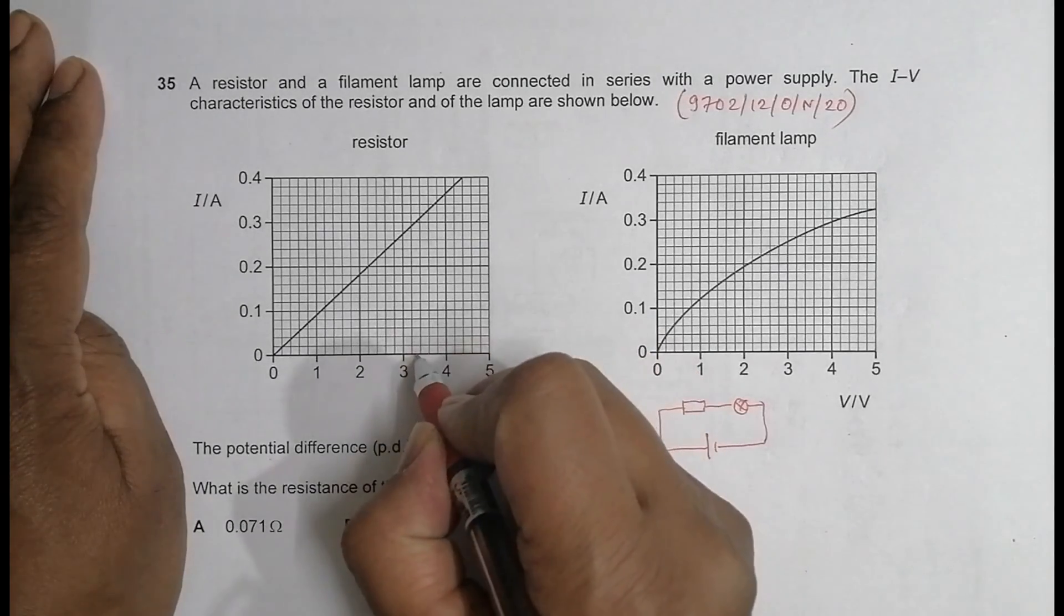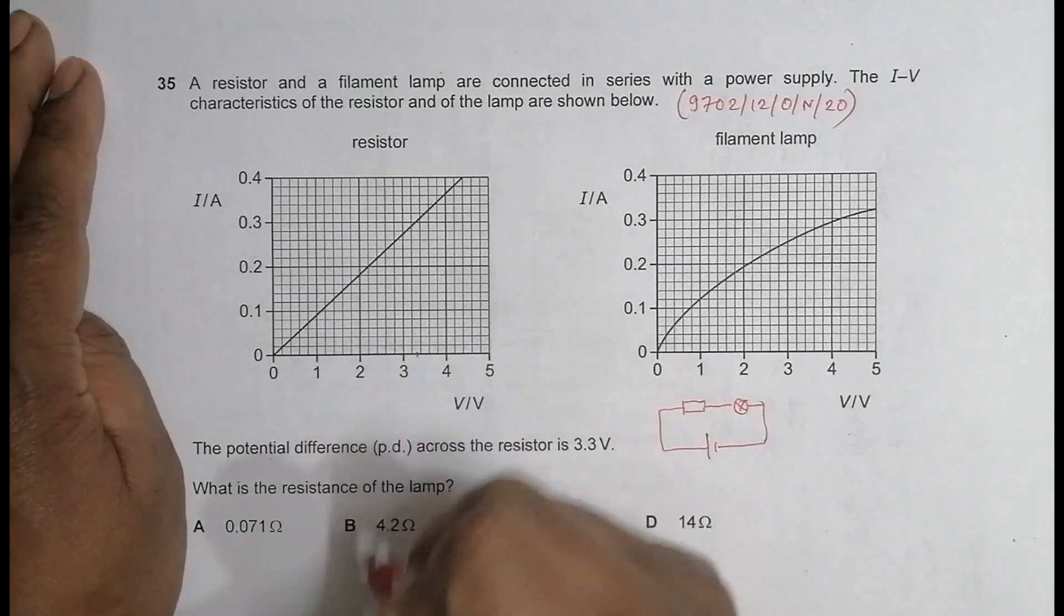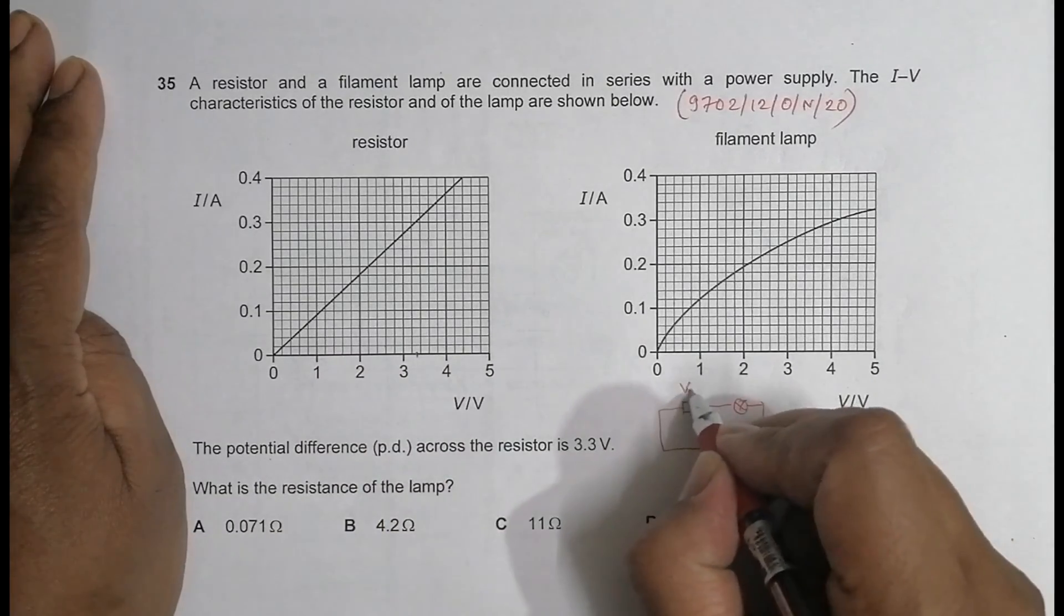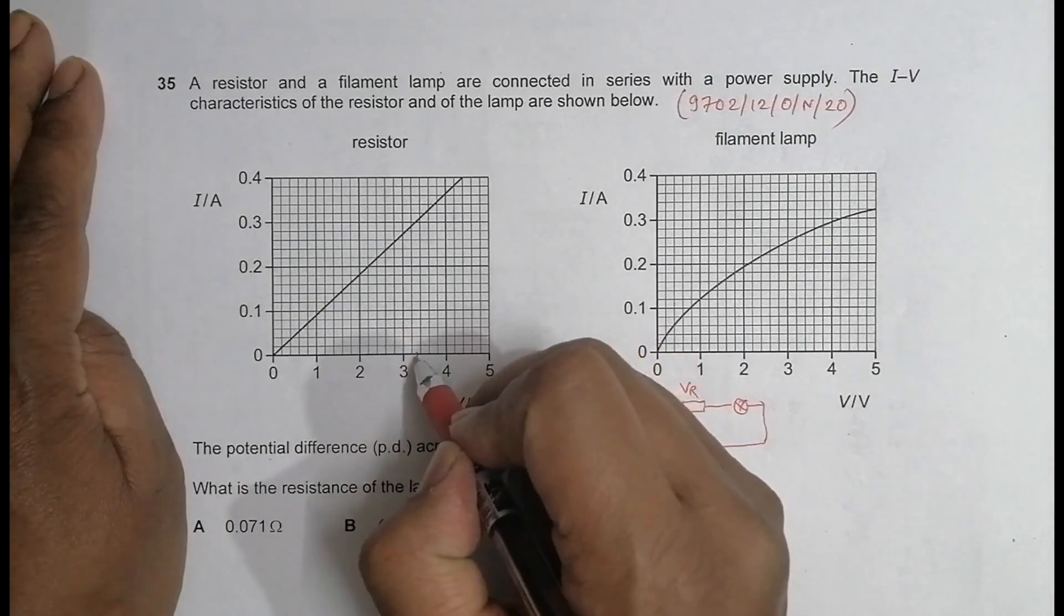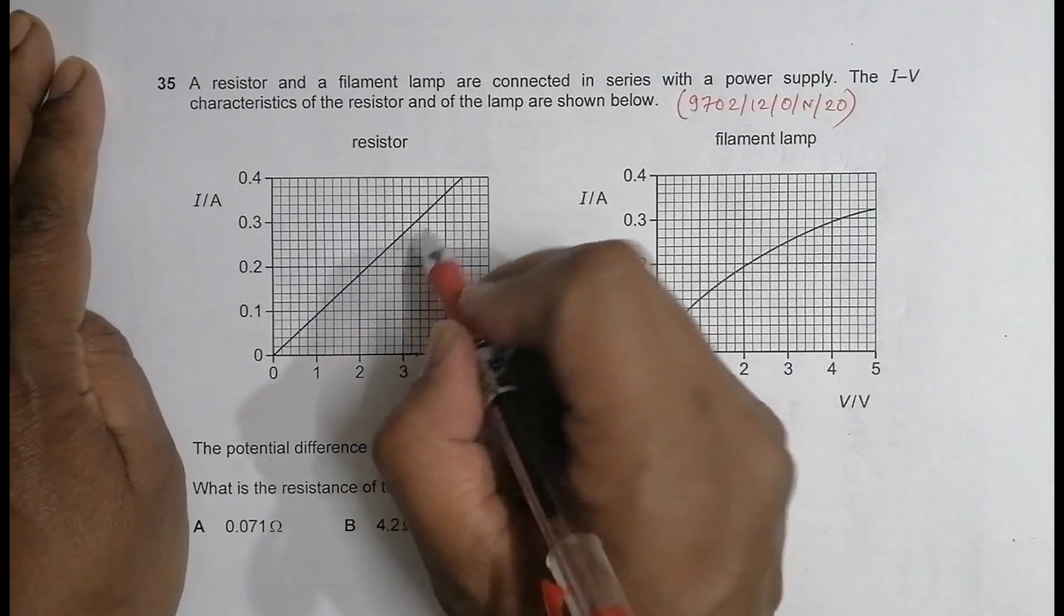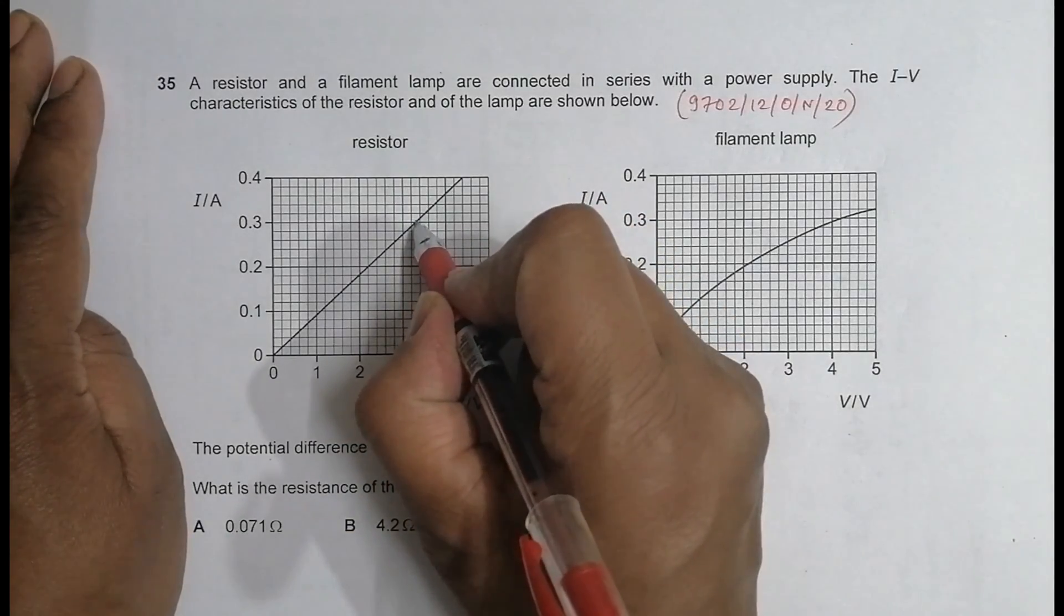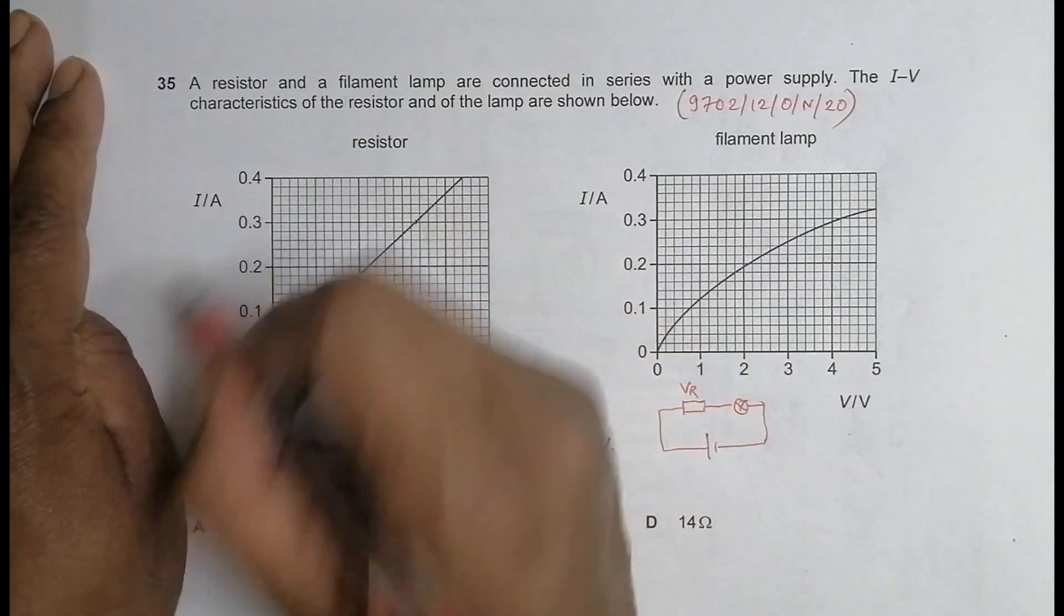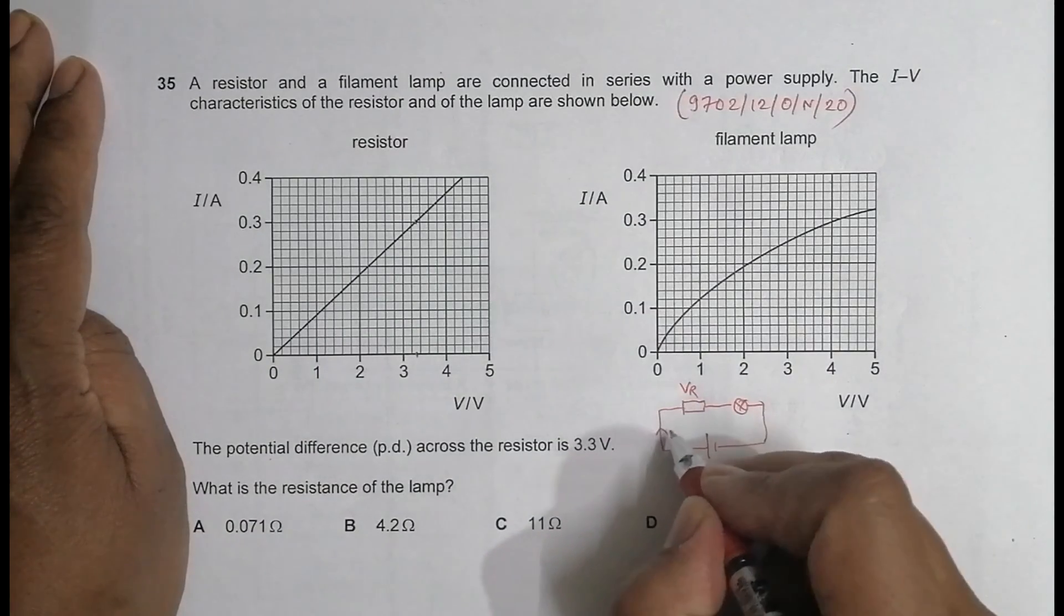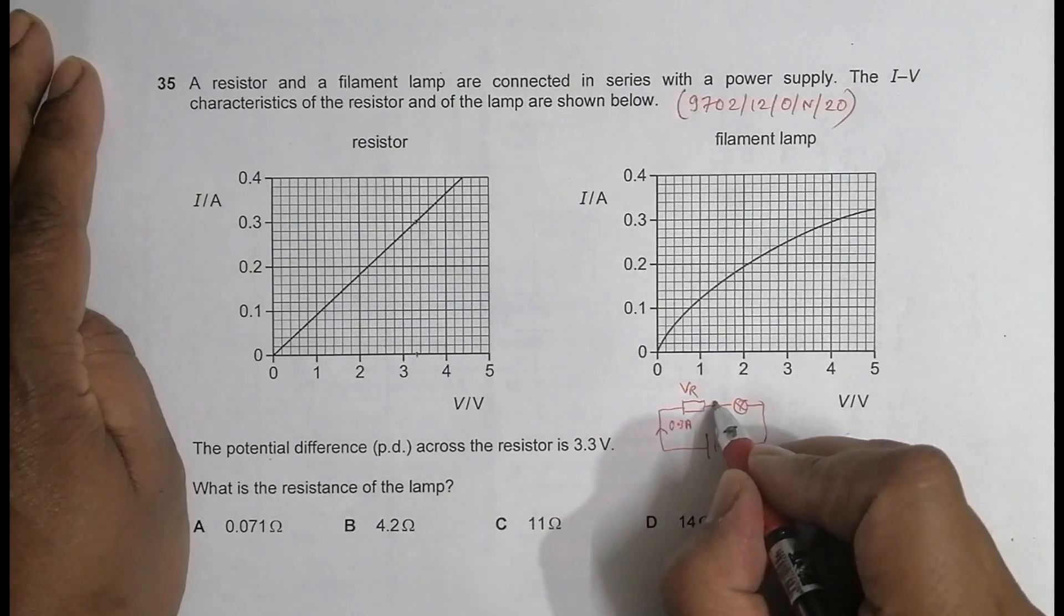So VR is equal to 3.3 volts, and the current flowing through it at that time is 0.3 ampere. So that means the current is equal to 0.3 ampere.